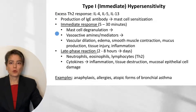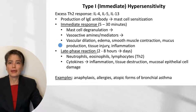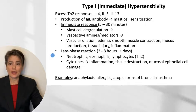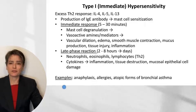With this degranulation, we get the release of vasoactive amines and mediators that cause vascular dilation, edema, smooth muscle contraction, mucus production, tissue injury, and inflammation. Over the next two to eight hours, evolving over days, we have our late phase reaction, which involves neutrophils, eosinophils, and lymphocytes, particularly of the Th2 subset. We get elaboration of abundant cytokines contributing to inflammation, tissue destruction, and mucosal epithelial cell damage. Examples of type 1 hypersensitivity include anaphylaxis, allergies, and atopic forms of bronchial asthma.